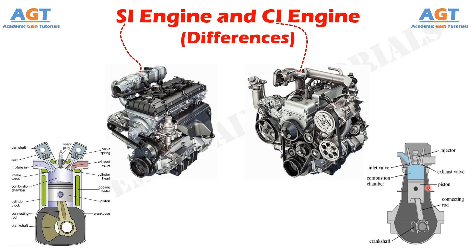SI engines are mostly used in light commercial vehicles such as scooters, motorcycles, cars, etc. On the other hand, compression ignition or CI engine is an engine in which combustion of fuel takes place by the heat of compressed air. It uses diesel as fuel and works on the diesel cycle. In the CI engine, only air enters the cylinder during the suction stroke. It has a high compression ratio because of the high ignition temperature of diesel fuel.